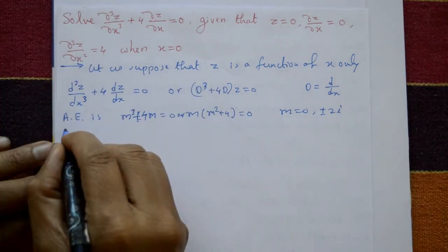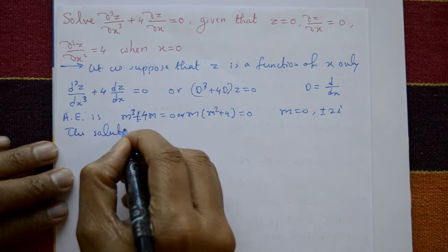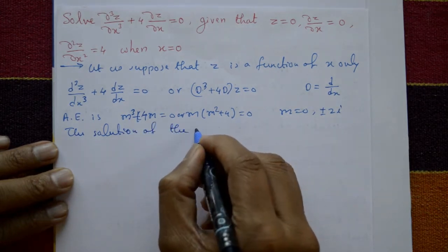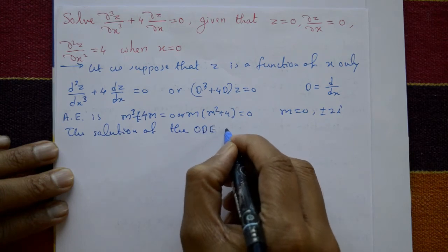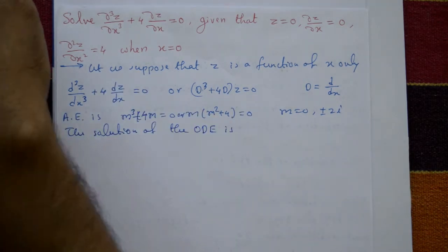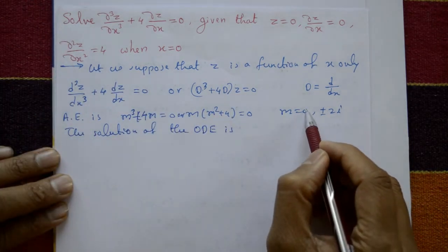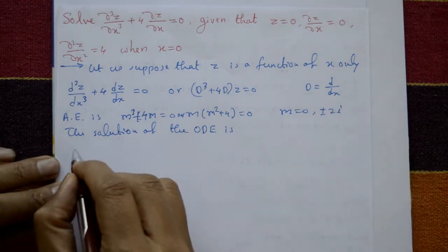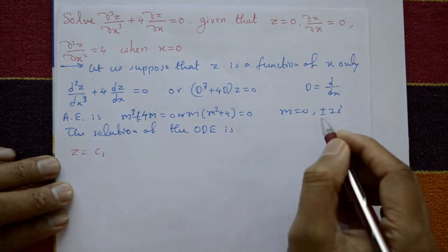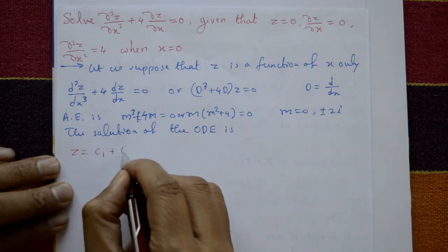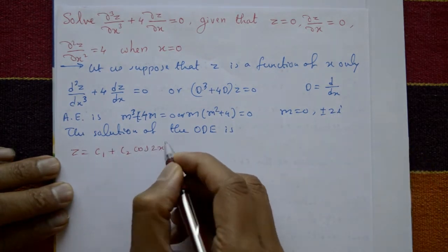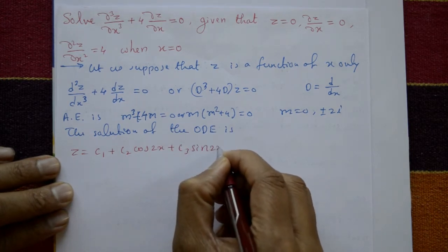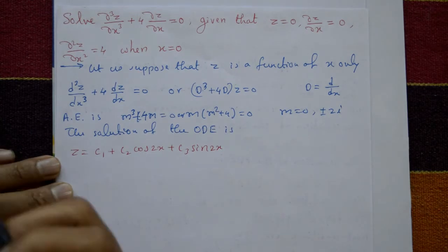Now write the solution of the ordinary differential equation. One root is 0 and the second and third are complex roots. So z = c₁e⁰ + c₂cos(2x) + c₃sin(2x), which gives z = c₁ + c₂cos(2x) + c₃sin(2x).